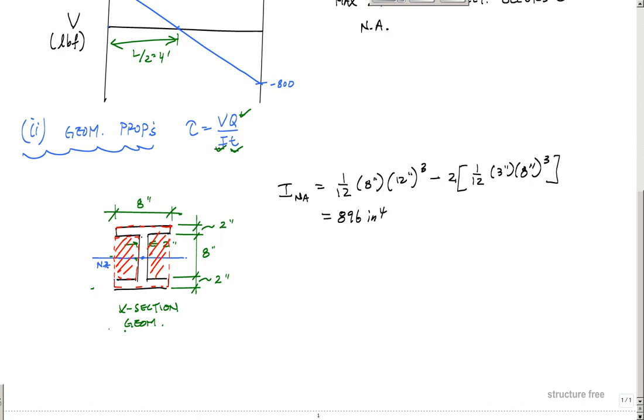The thickness that we're going to use is where we're interested in the maximum shear stress. In this case, we're interested in the maximum shear stress at the neutral axis, so we want this thickness right there through the cross-section. In this case, this is two inches.